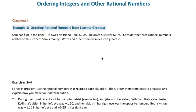Sam has $10 in the bank. He owes his friend Hank $2.25. He owes his sister $1.75. Consider these three rational numbers related to this story of Sam's money. If we had to attribute value to these, the money that he owes would really be negative — we can think of this as negative $2.25 and negative $1.75.